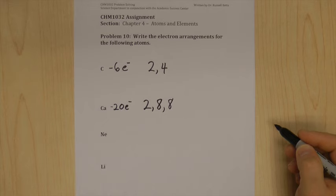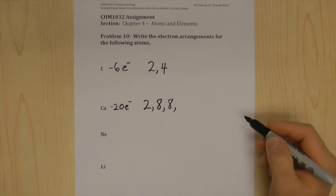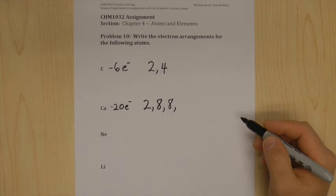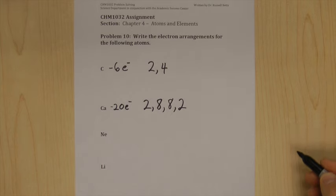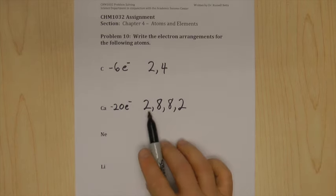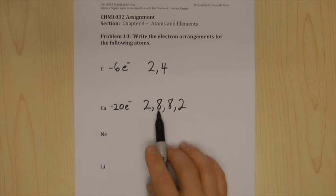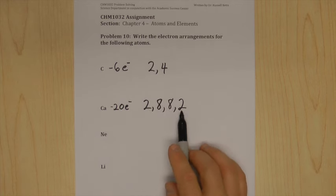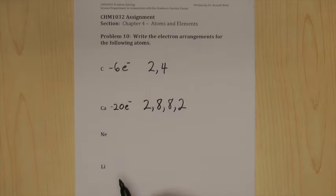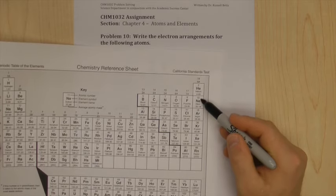So we have 2, 8, 8 — that's only 18. Now we go to the fourth energy level, which can hold 18, but we're only going to use 2 of them. So calcium's arrangement is 2,8,8,2. Checking: 2 plus 8 is 10, plus 8 is 18, plus 2 is 20. That's correct.